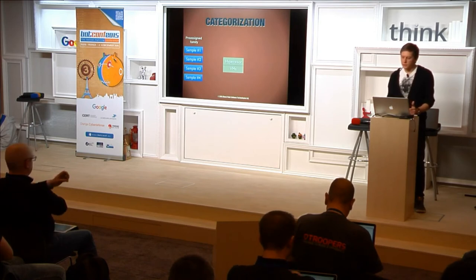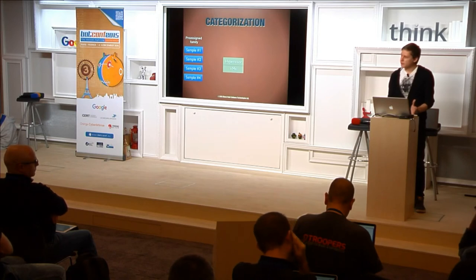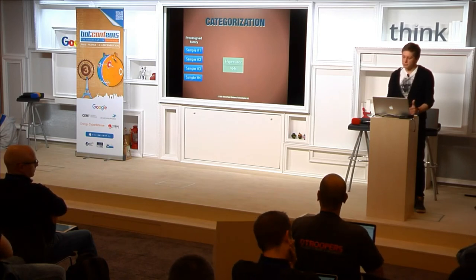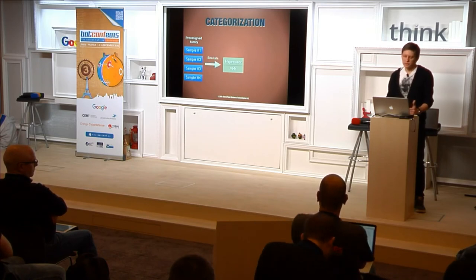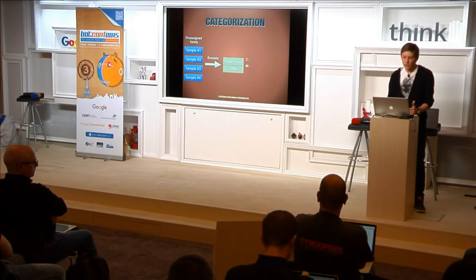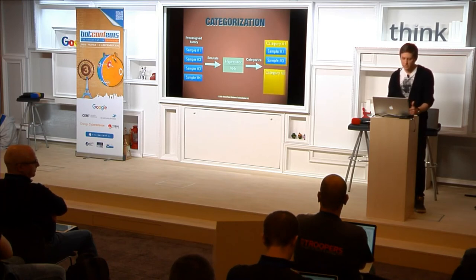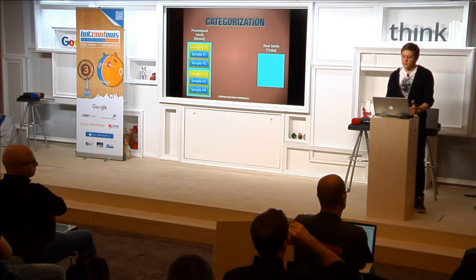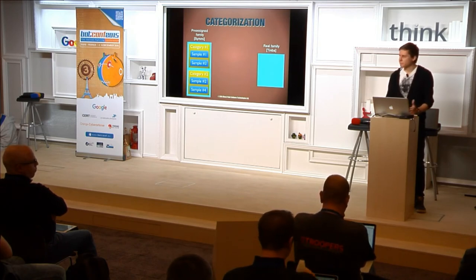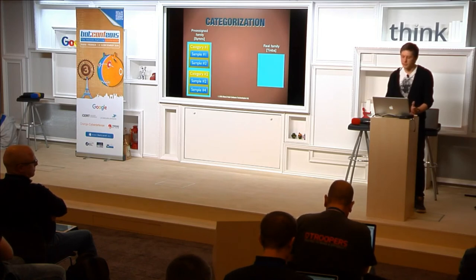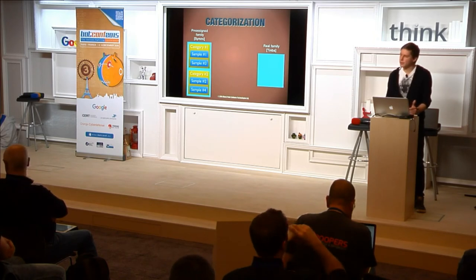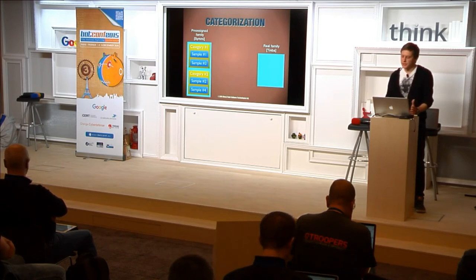For our categorization system, we download samples with a pre-assigned family from our samples feed provider, then emulate those samples using our custom VMs, take the results and categorize them using a unique name for each category. We can also reassign a sample's family after the emulation stage. For example, if we receive a sample that the feed provider marked as one family, and after emulation we recognize that the generated domains actually belong to the TINBA family, DGA Lab automatically reassigns the sample to the TINBA family based on the domains.